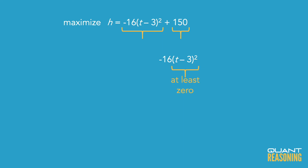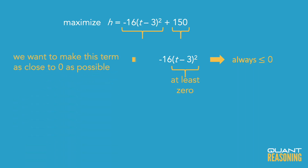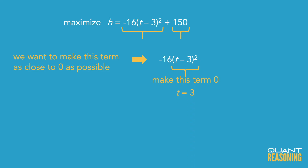So that first part of the formula — negative 16 times t minus 3 squared — will never be positive. At most it'll be zero, and when will it be zero? If t is 3. If t equals 3, that zeros out the first part of the formula and you just have 150.